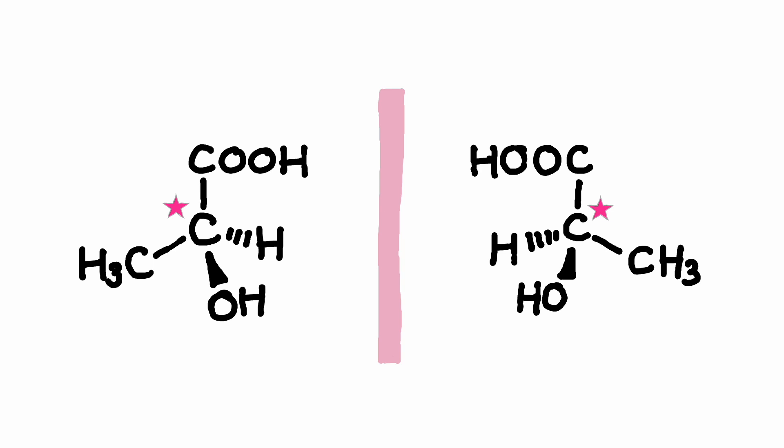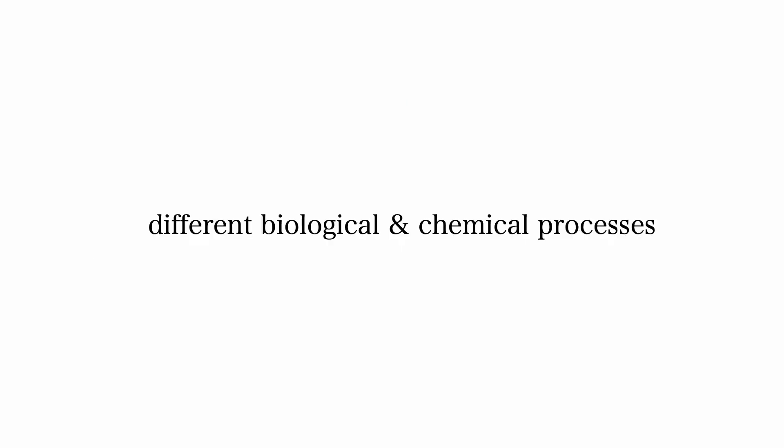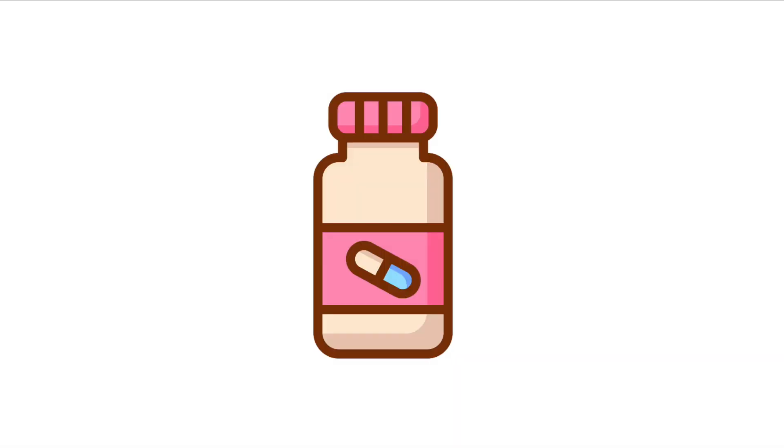Enantiomers are mirror image isomers of each other that cannot be superimposed onto one another. They are like the left hand and the right hand, going back to the previous analogy. Chirality is important in various biological and chemical processes. Enantiomers of chiral molecules often have different biological activities. For example, some drugs exist in chiral forms and only one enantiomer might have the desired therapeutic effect while the other could be inactive or even harmful.